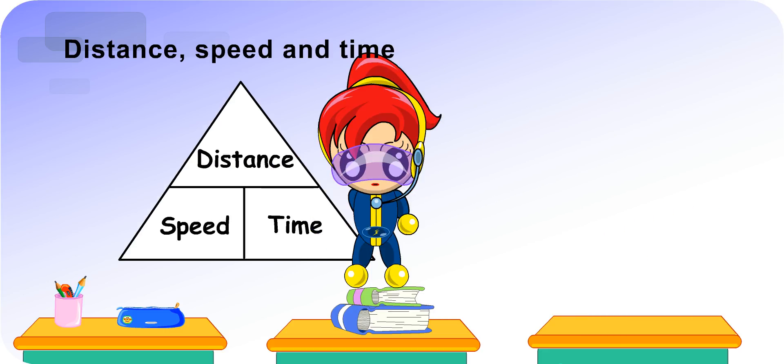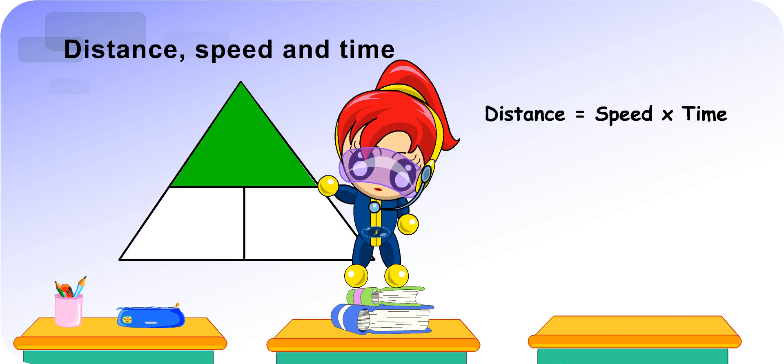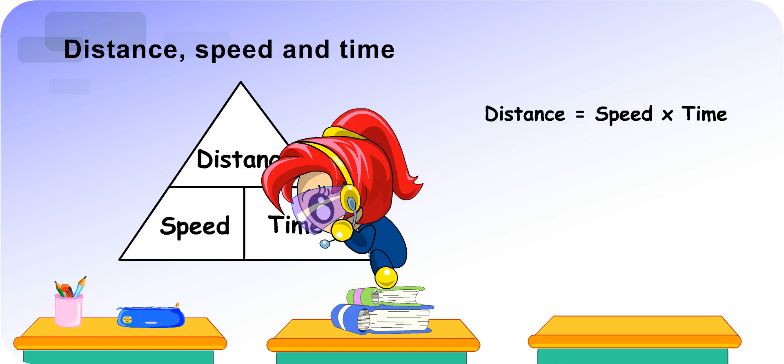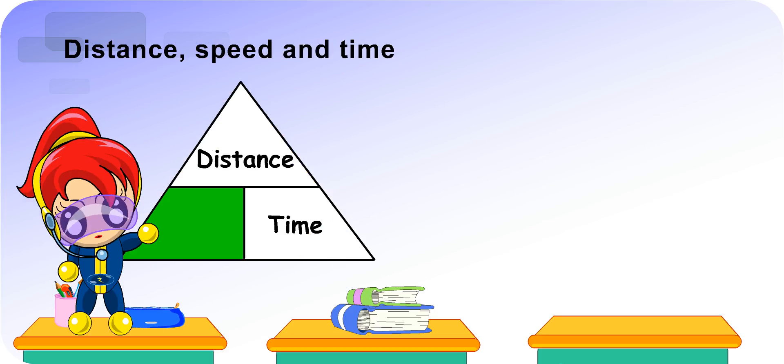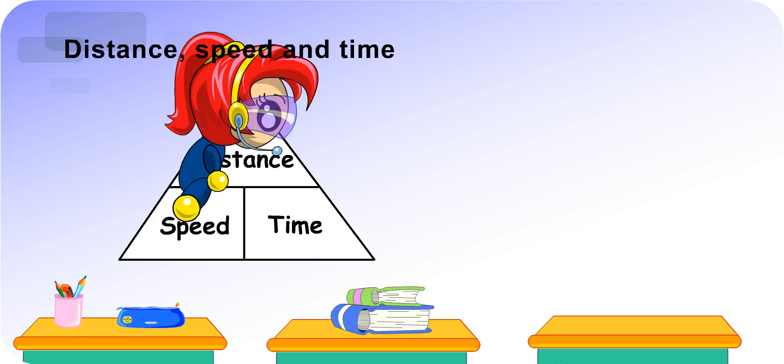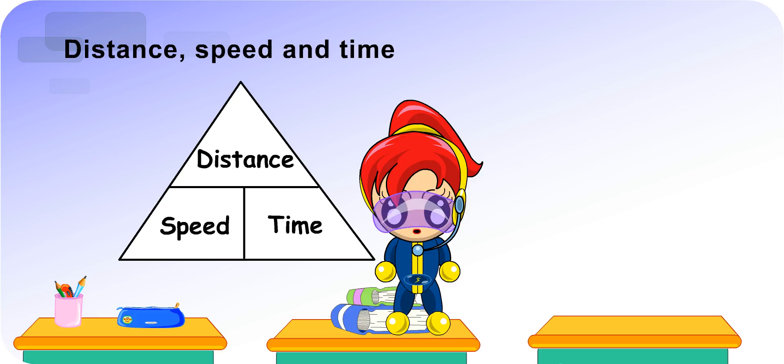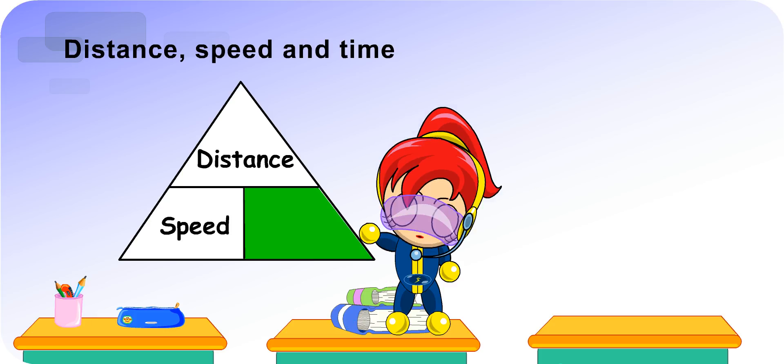Okay. To find distance, cover distance and we have speed times time. To find speed, cover speed and we have distance divided by time. Turbo Girl, can you show us how to find time? Since we are finding time, we cover time. So, we have distance divided by speed. Well done.